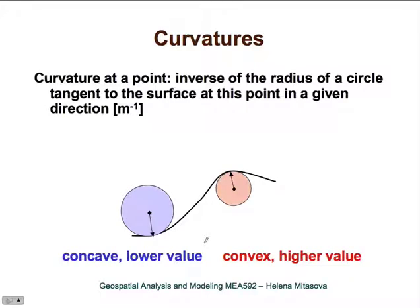In this section of the lecture on topographic analysis, we will focus on curvatures, derivation of parameters from splines and landforms. Curvature at a point is the inverse of the radius of a circle that is tangent to the surface at this point, in a given direction. Its units are inverse meters.